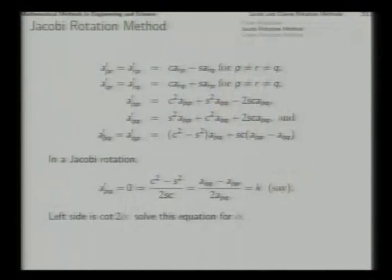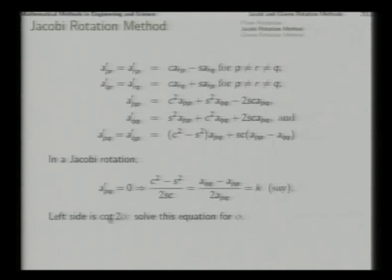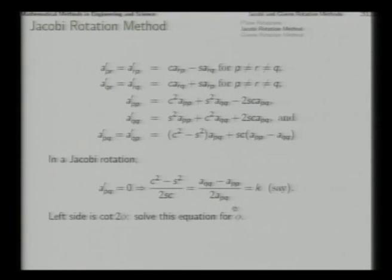The p-q element of the new transformed matrix is given by this expression. If you want this to be 0, transpose the term to the other side, then divide both sides by twice sin*cos (where c=cos(phi), s=sin(phi)). You get cos²(phi) minus sin²(phi) over 2sin(phi)cos(phi), which is cos(2phi)/sin(2phi) = cot(2phi). So cot(2phi) equals an expression of the old elements of A which is known. That means we can solve for phi.